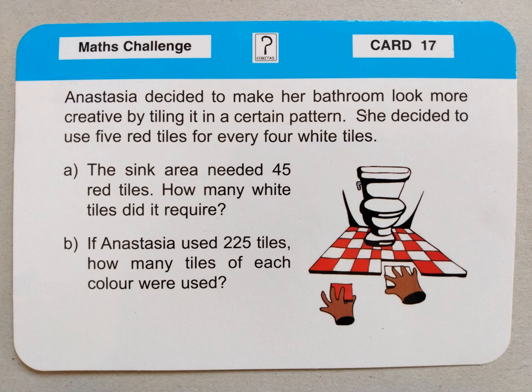Next one. Anastasia decided to make her bathroom look more creative by tiling it in a certain pattern. She decided to use five red tiles for every four white tiles. Part A: the sink area needed 45 red tiles — how many white tiles did it require? And if Anastasia used 225 tiles in total, how many tiles of each colour were used? I might do this one in an arty way and draw some tiles myself, just for a change of tactic to solve the problem. It's up to you how you approach it.